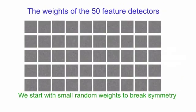So let's start with some random weights for the 50 feature detectors. We'll use small random weights, and each of these squares shows you the weights to the pixels coming from a particular feature detector. The small random weights are used to break symmetry. Though because the update rule is stochastic, we don't really need that.